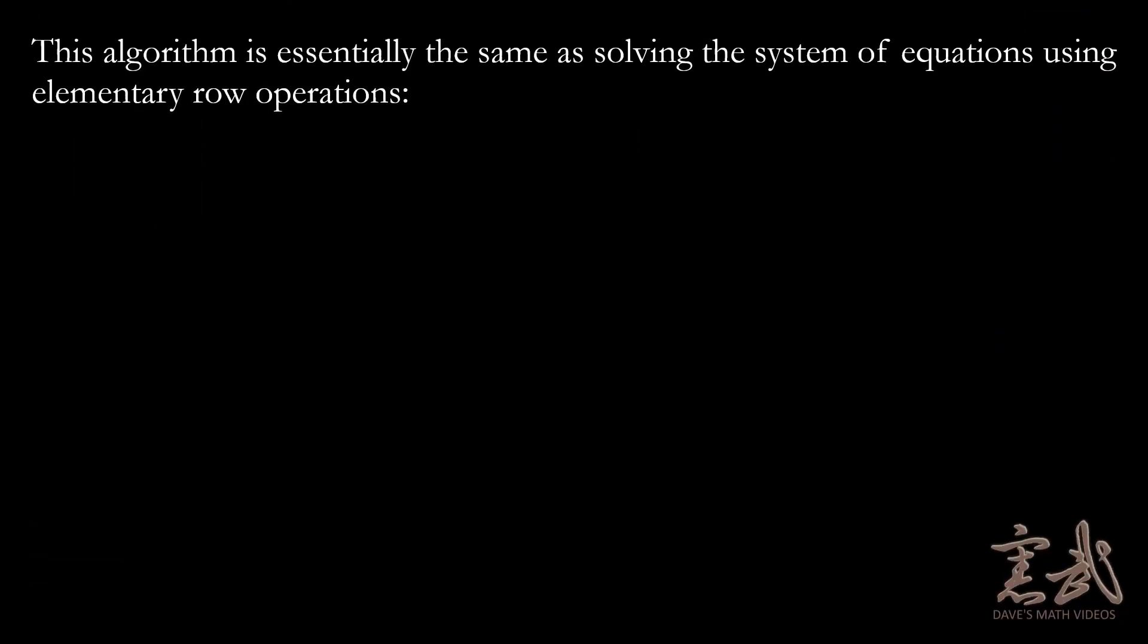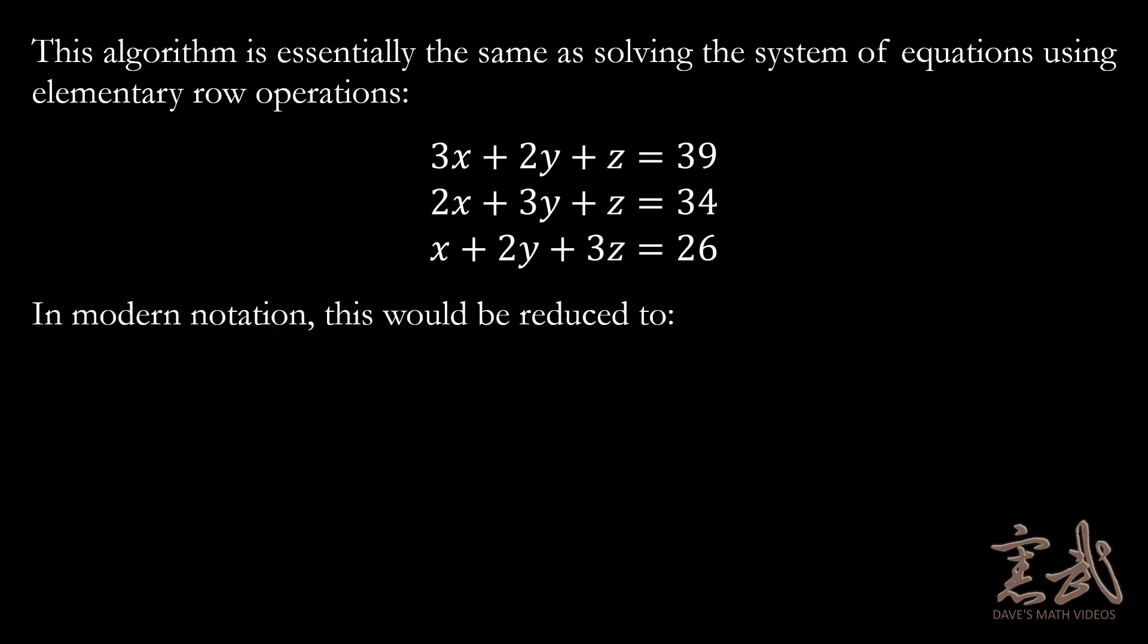When we're paying attention, this algorithm is essentially the same as solving a system of equations using the elementary row operations. So, in modern notation, this would be 3x plus 2y plus z equals 39, 2x plus 3y plus z equals 34, and x plus 2y plus 3z equals 26. In modern notation, we could reduce this to the following matrix. In the top row, we have 3, 2, 1, and 39, 0, 5, 1, and 24, and in the bottom row, we have 0, 0, 36 and 99. And the solving of this system of equations would be done in almost an identical fashion to the method we saw earlier. It is simply rotated 90 degrees.